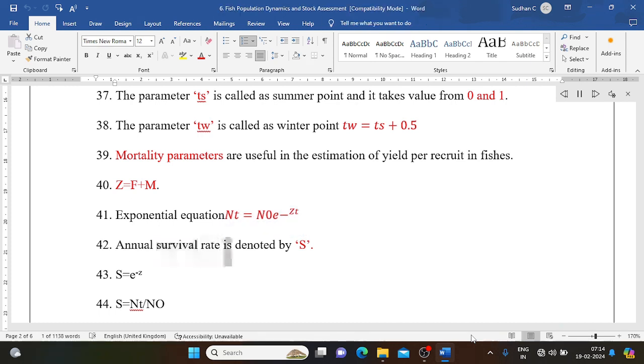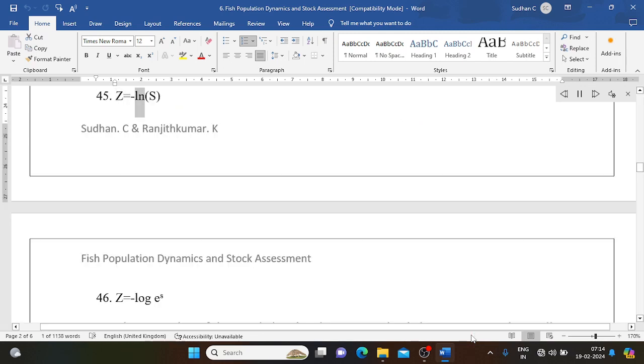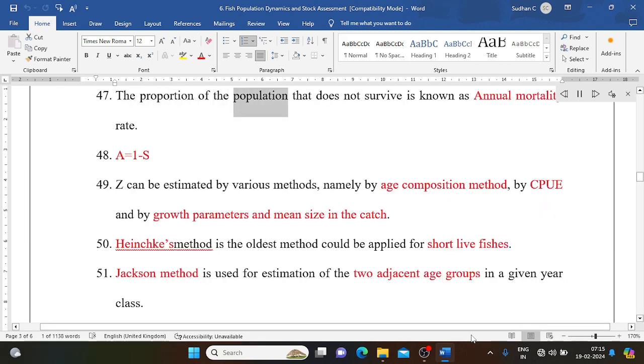Annual survival rate is denoted by S. S equals e to the minus Z. S equals Nt/N0. Z equals minus ln S. Z equals minus log e S. The proportion of the population that does not survive is known as annual mortality rate A equals 1 minus S. Z can be estimated by various methods, namely by age composition method, by CPUE, and by growth parameters and mean size in the catch.